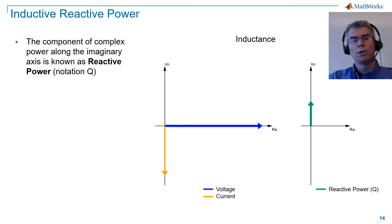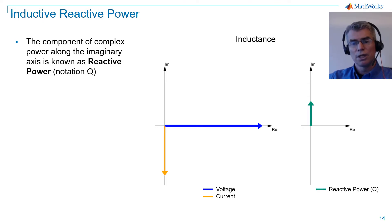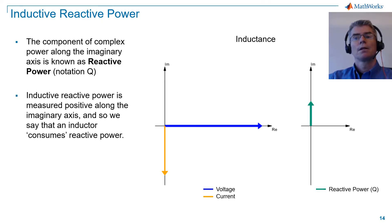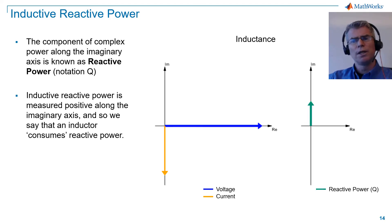We'll now look at complex power in an inductor. The component of complex power along the imaginary axis is known as reactive power, notation Q. Inductive reactive power is measured positive along the imaginary axis, and so we say that an inductor consumes reactive power. Note that this is convention due to the way that we construct the complex power equation.